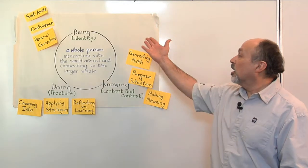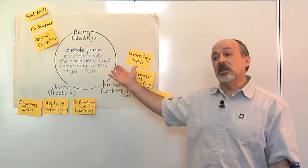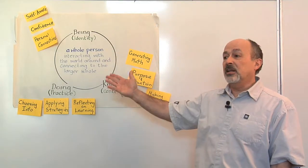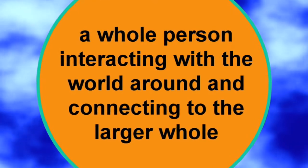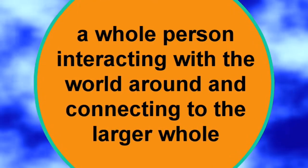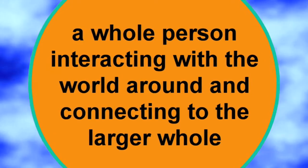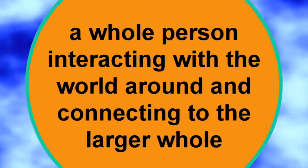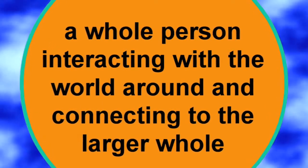Now here's a model that we've come up with. Again, this is just a way of looking at learning; it's not anything prescriptive. It's in a circle, but the key element of this model is the very center. It says that a whole person interacting with the world and around with their community is the center of learning.